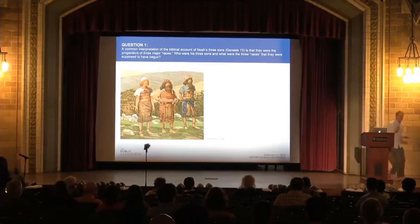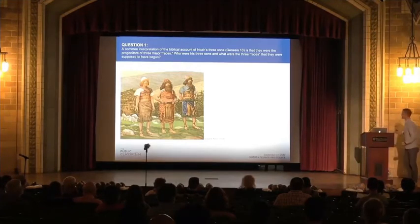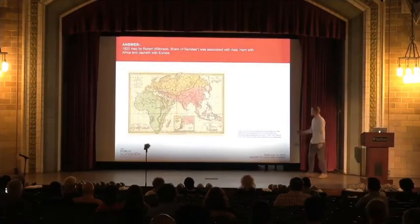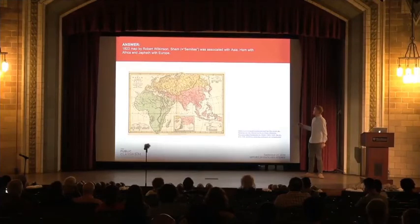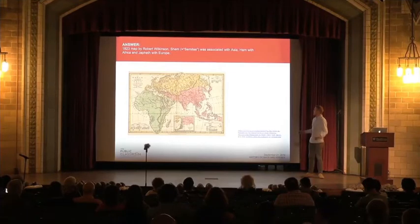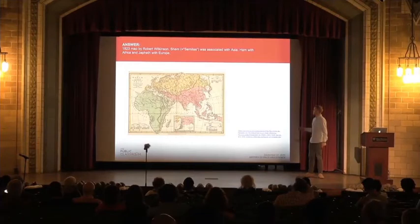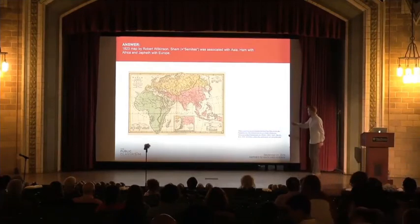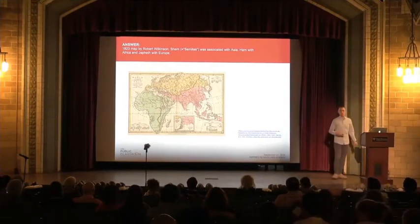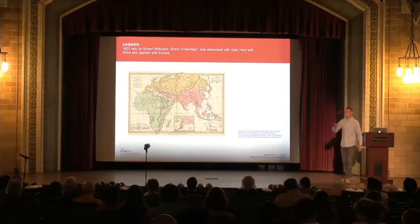Shem, Ham, and Japheth — that's absolutely correct. Shem was, supposedly, the progenitor of the Asian race. It's from Shem that we get the word Semites. Ham was the progenitor of the alleged African race, and Japheth the European. This is actually a map from the early 19th century that attempts to use the biblical account as a way to explain human diversity.